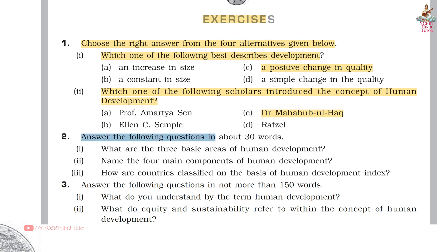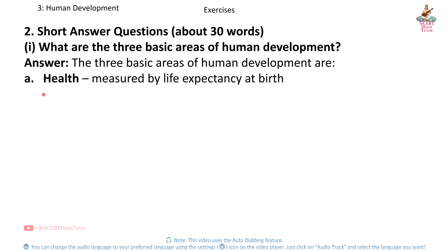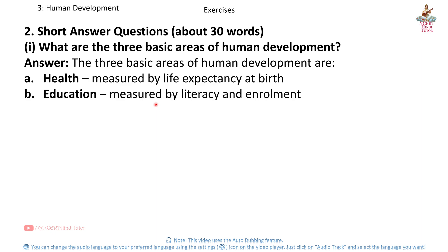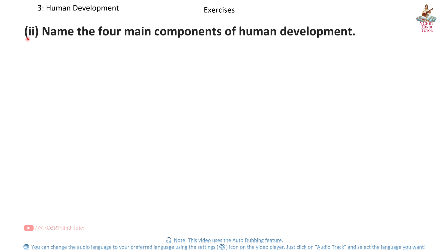Answer the following questions in about 30 words. Question 1: What are the 3 basic areas of human development? Answer: The 3 basic areas are: A) Health, measured by life expectancy at birth; B) Education, measured by literacy and enrollment; C) Access to resources, measured by standard of living or income.